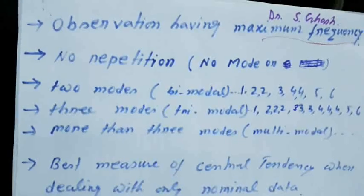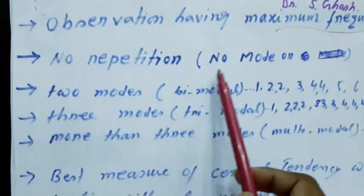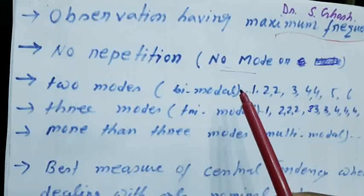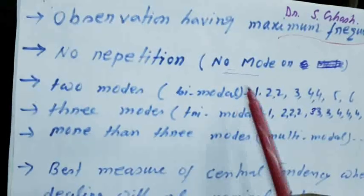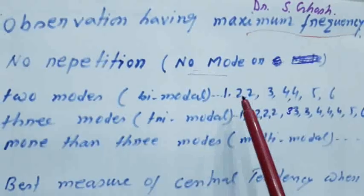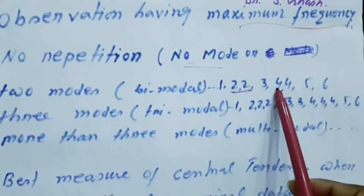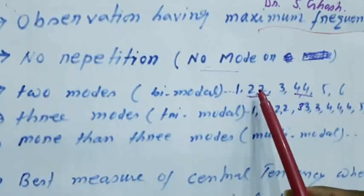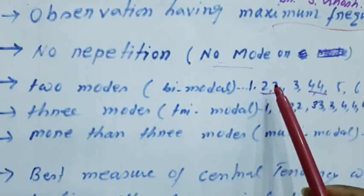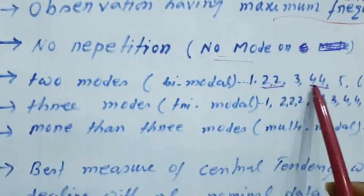Mode is of different types. If there is no repetition of any observation, then it will be called 'no mode.' But if we see that the observations have two modes, it is called a bimodal data set. For example, suppose in a data set it is 1, 2, 2, 3, 4, 4, 5 — here 2 occurs 2 times as well as 4 occurs 2 times, so the maximum frequency is 2 for both. This observation has two modes and is called bimodal.